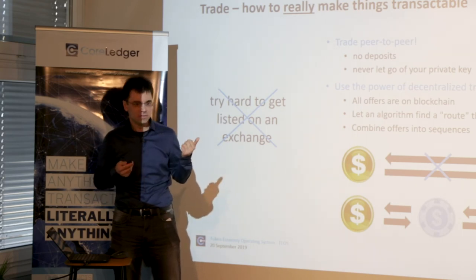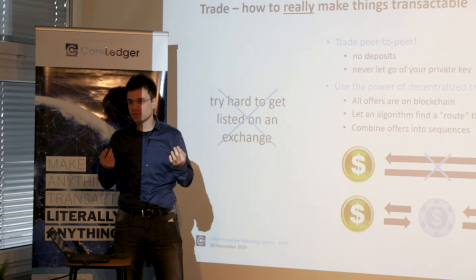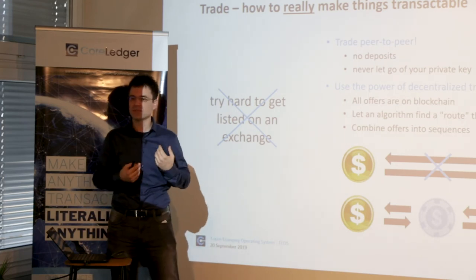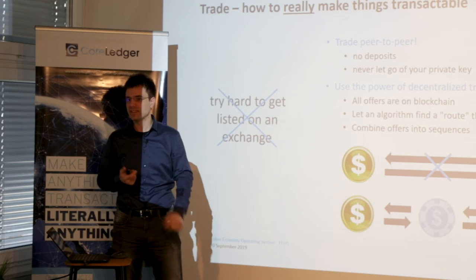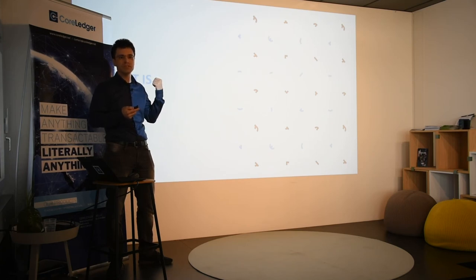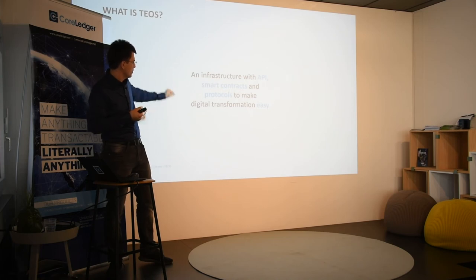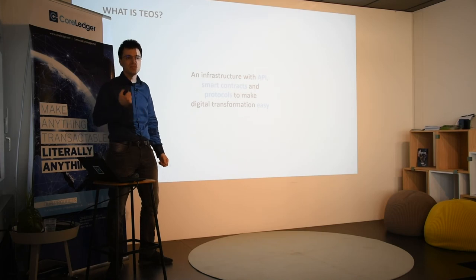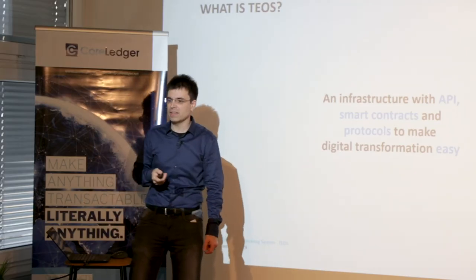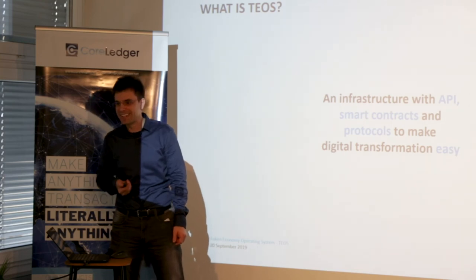What results is, in essence, a decentralized marketplace — a decentralized exchange — without us being the ones who run it. It runs on itself on the basis of smart contracts. So TEOS is the combination of all four features I mentioned. It's an infrastructure combining various APIs, smart contracts, and protocols. The underlying idea is to make digital transformation simple and easy, which is what we've done for these three projects already, running on the API layer.